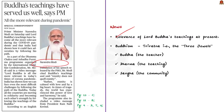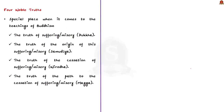When discussing Buddhism, first we must cover the three jewels: the first jewel is Buddha — the teacher; the second is Dharma — the teaching; and the third is Sangha — the community. Regarding the teachings of Buddhism, the four noble truths hold a special place: the truth of suffering (Dukkha), the truth of the origin of suffering (Samudaya), the truth of the cessation of suffering (Nirodha), and the truth of the path to cessation (Magga).